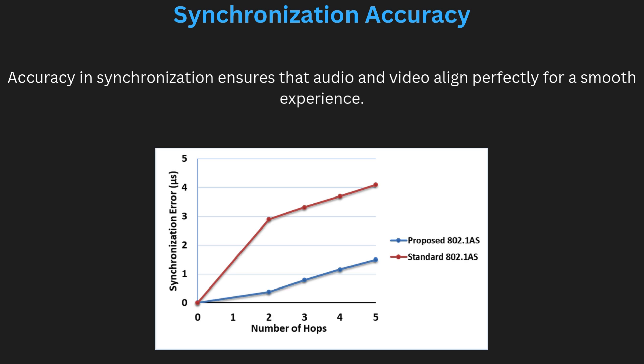For example, in a movie, the dialogue must match the actor's lip movements exactly. If the audio lags behind the video, the effect can be very bad. Achieving high synchronization accuracy involves precise control over the timing of multimedia playback.